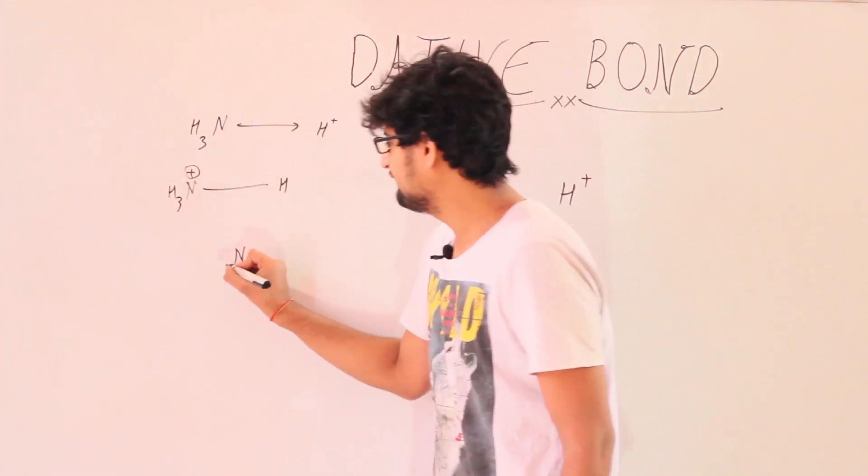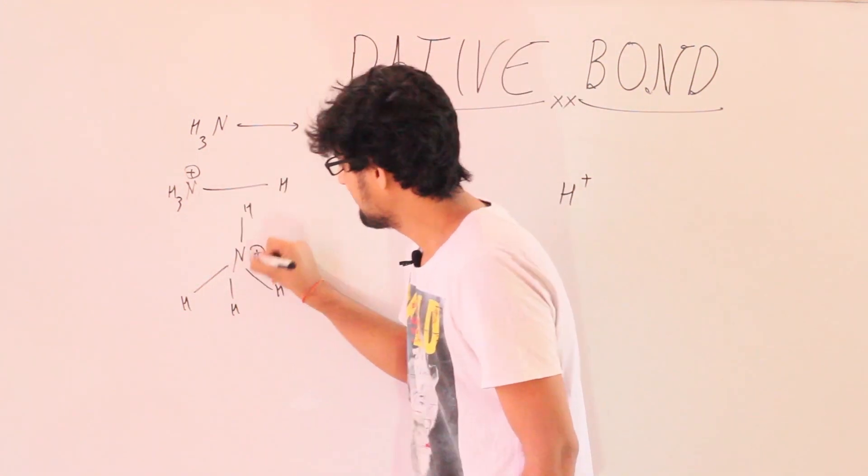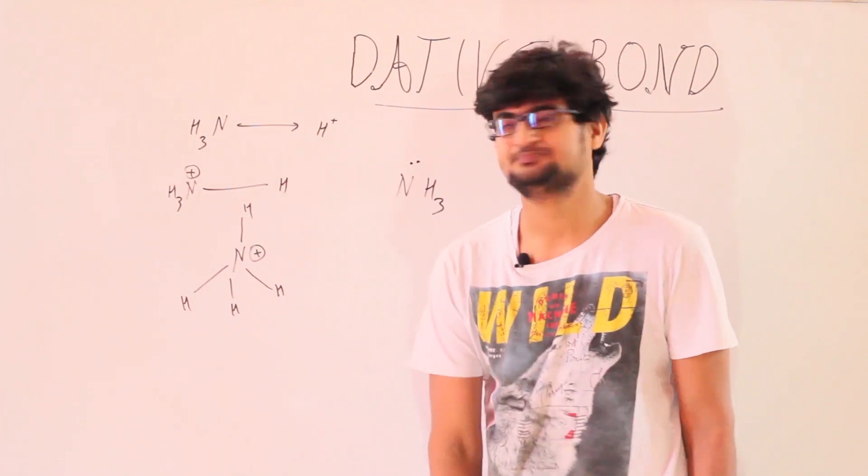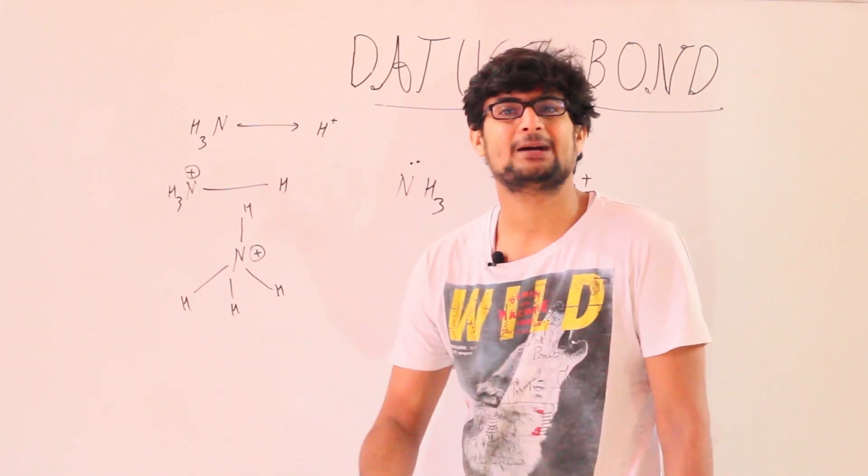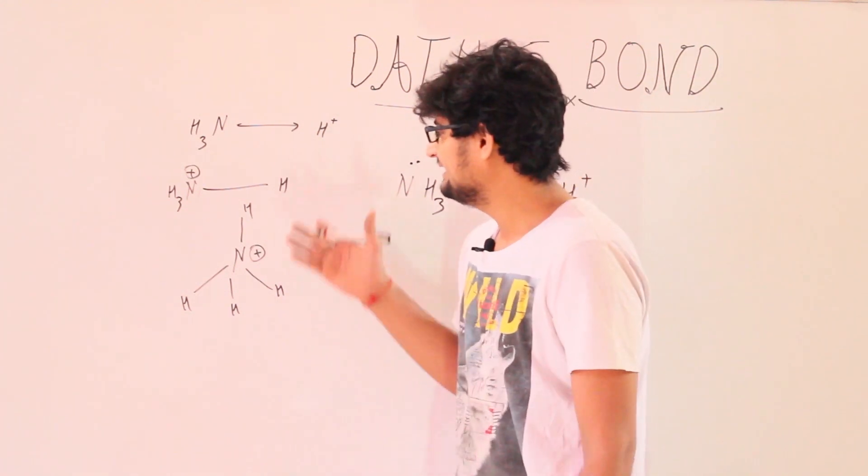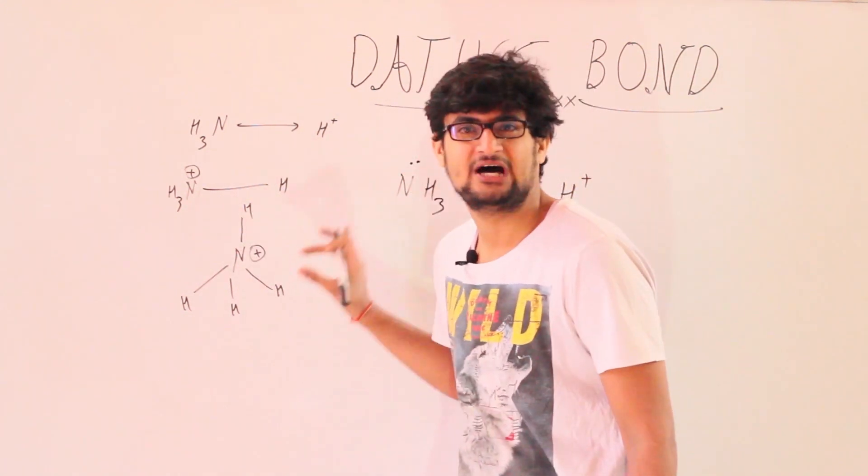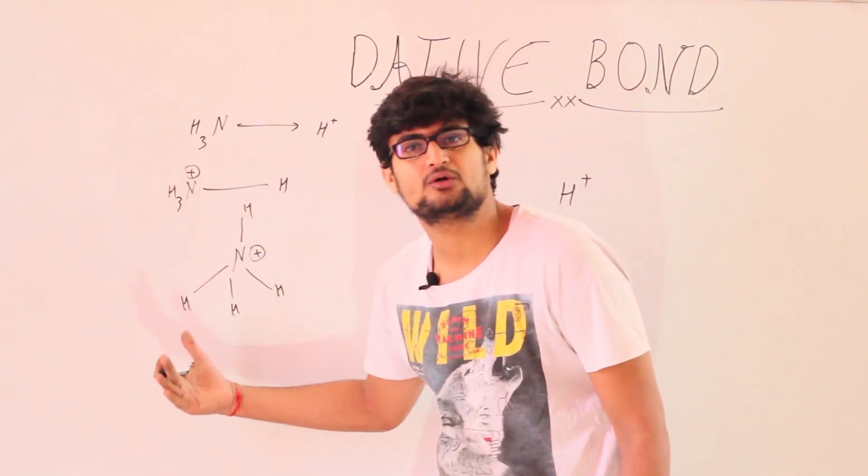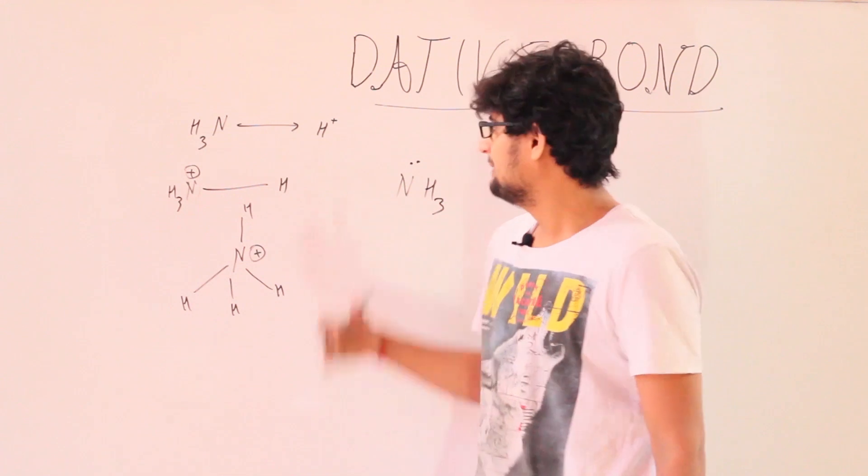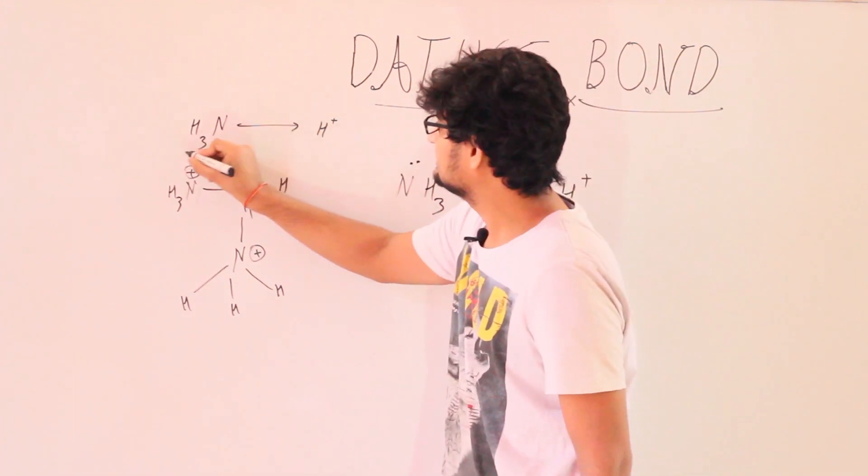The better structure of this ion should look like this one, and in this case through IR data, infrared spectrum data, we can say that all NH bonds are equivalent.